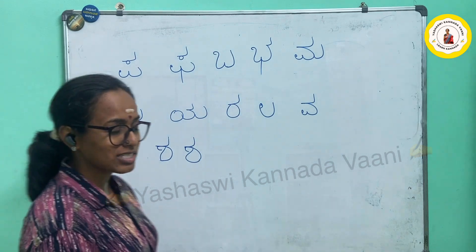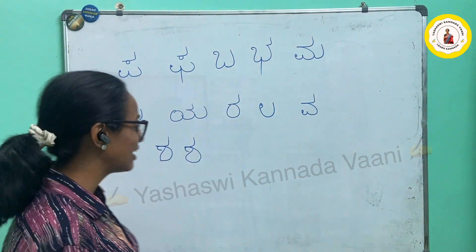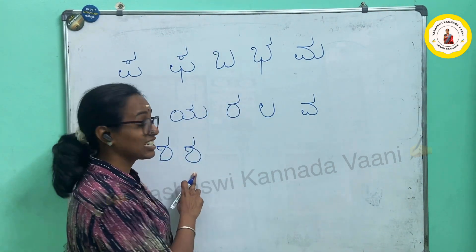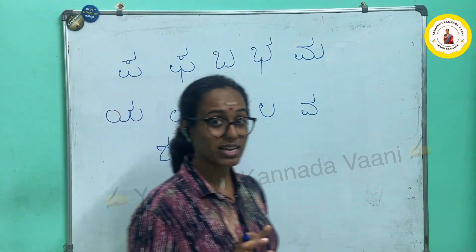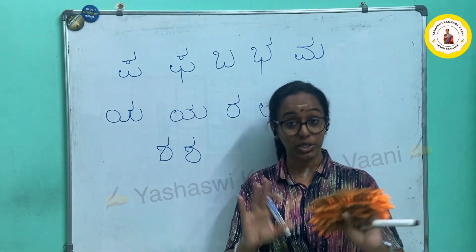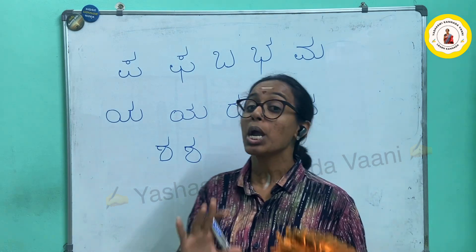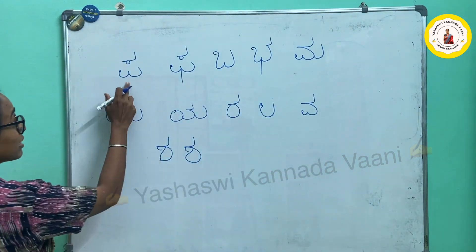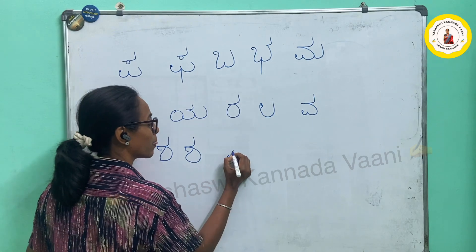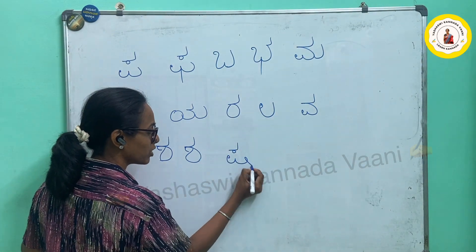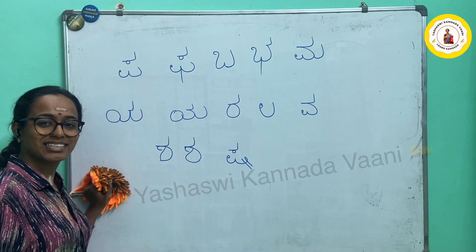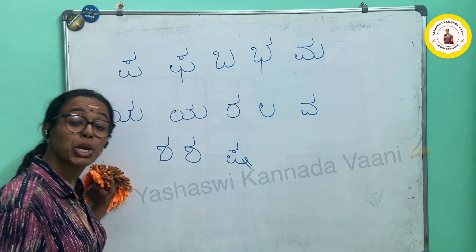I'm sorry for the background noise — there is some construction going on. Then is letter SH — SHIBA or Sri Lanka. The next one is SH, like 'shut the door.' How do I write? Remember the PA? Write as it is first. Now here put a knot, then put a line. That's it — that is letter SH.